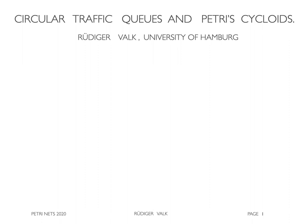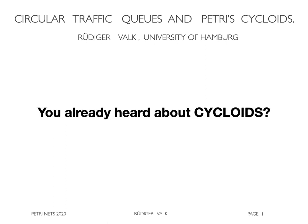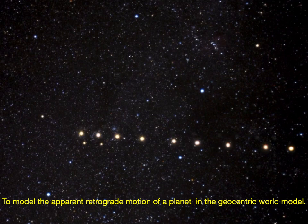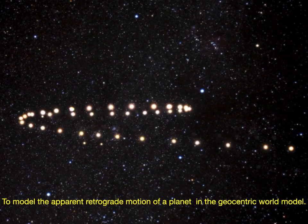My talk is on the modeling of circular traffic queues by cycloids. Maybe you already heard about cycloids? The notion is known from ancient astronomy. It has been used to model the apparent retrograde motion of a planet in the geocentric world model.